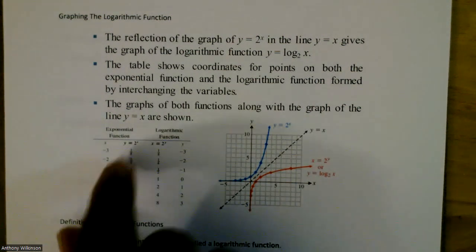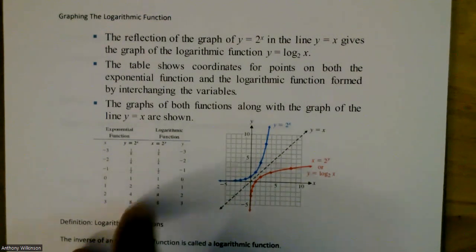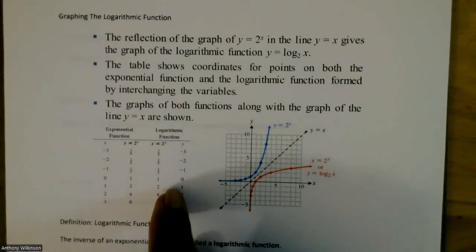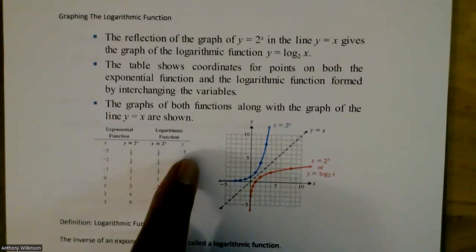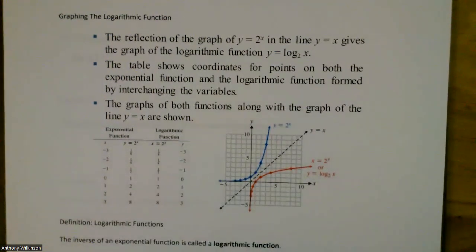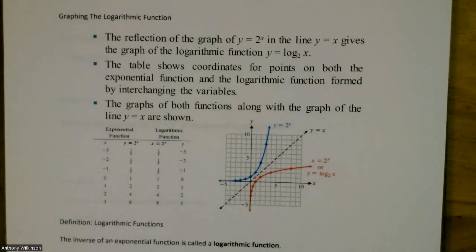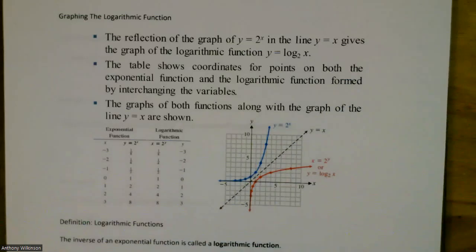The reflection of the graph of y = 2^x in the line y = x gives the graph of the logarithmic function y = log₂(x). This graph is the mirror image of the exponential graph, with the line y = x as the line of symmetry. The table shows coordinates for points on both functions formed by interchanging variables, and the graphs of both functions along with the line y = x are shown.